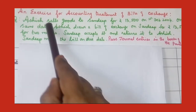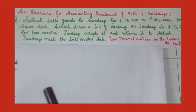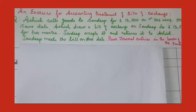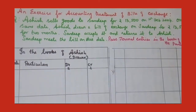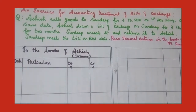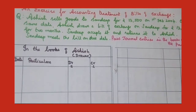Now let us finish the journal entries in the books of the drawer — the one who draws the bill, the seller of the goods. I have already told you, only the seller will draw the bill, will make the bill, will prepare the bill. We will pass the journal entries in the books of Ashish, that is the seller. First, he sells the goods to Sandeep. What is the journal entry for selling goods on credit?